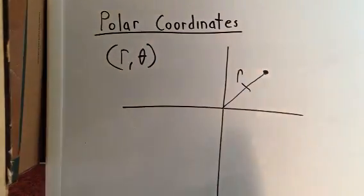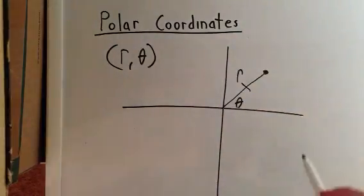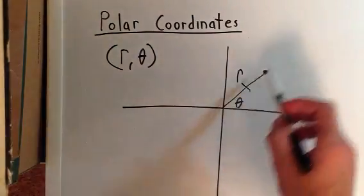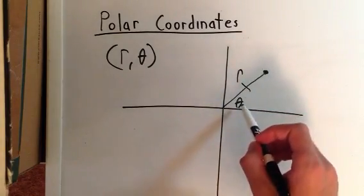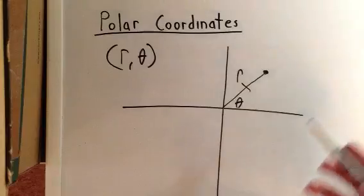And θ is basically the angle between the polar axis and the line segment, the r. This angle right here. And so that's pretty much it.